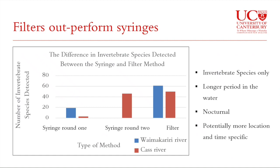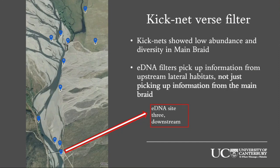We compared eDNA results to kick net samples. My most downstream eDNA site had upstream kick net samples taken at places like One Tree Hill, spring-fed side braids, and other lateral habitats that are slowly trickling information into the main braid. We wanted to see if the downstream eDNA site captures biodiversity from all these lateral habitats. We found it is picking up information from upstream habitats — species found in the springs are also detected in the downstream main braid filter. The kick net data also confirmed that the main braid itself has low abundance and low diversity; the lateral habitats are where braided river biodiversity originates.